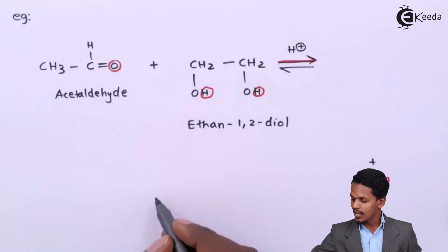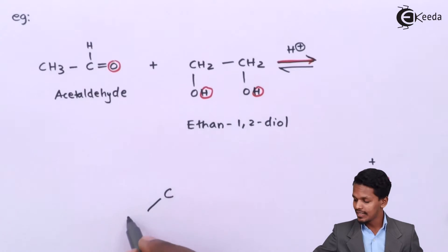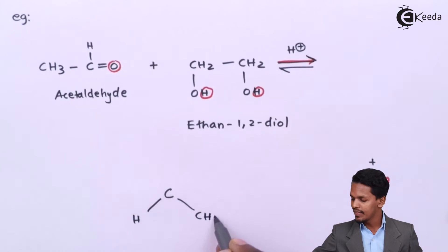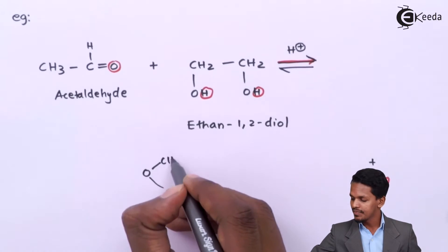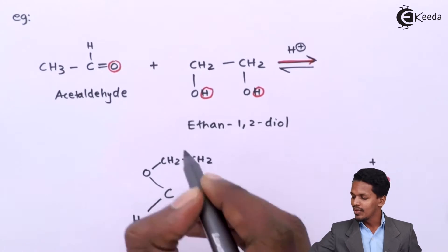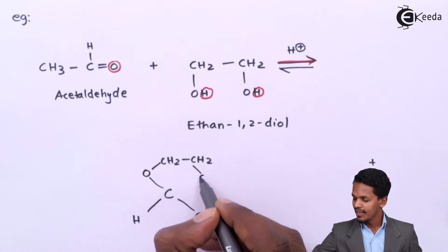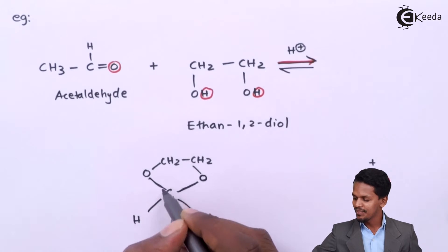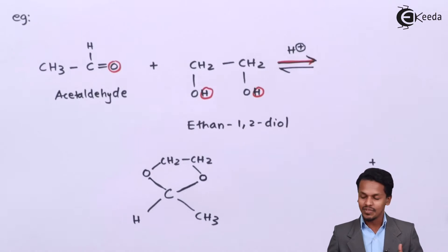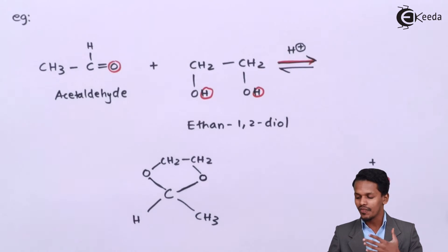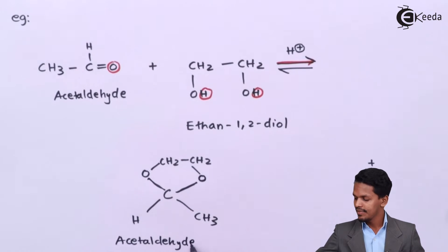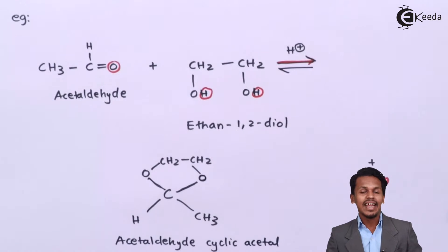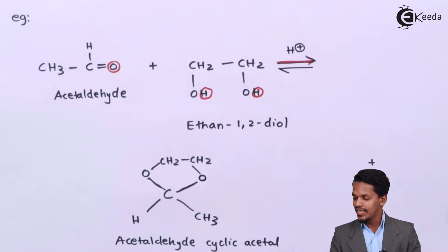The product formed has the central carbon with a hydrogen atom and a methyl group (CH3) attached, while the remaining valencies are connected through oxygen-CH2-CH2-oxygen, forming a five-membered cyclic ring. This product is an acetal, and since it is formed from acetaldehyde, it is called acetaldehyde cyclic acetal.